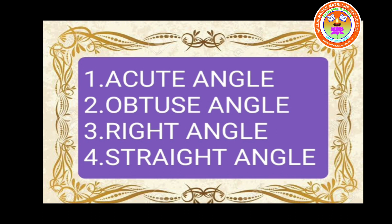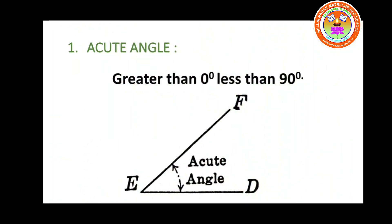Shall we learn, children? Yes. The first one is acute angle. Acute angle is nothing but greater than 0 degree, less than 90 degree. For example, 30 degree, 45 degree, 50 degree, 80 degree. So these angles lie between 0 and 90, so these are called an acute angle. You can observe the diagram, children. Angle F, E, D — here the angle E represents an acute angle.